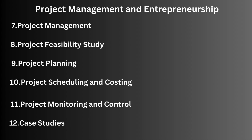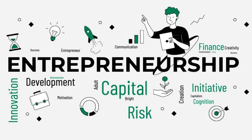Chapter 8 is project feasibility study — understanding how to assess the viability of your project through feasibility studies. Chapter 9, project planning, dives deeper into the planning phase including setting objectives and outlining steps. Chapter 10 covers project scheduling and costing — how to schedule your project effectively and manage costs. Chapter 11 is project monitoring and control, discussing techniques for monitoring progress and controlling project variables to stay on track. Chapter 12, case studies, looks at real-world examples to understand the practical applications of concepts learned.